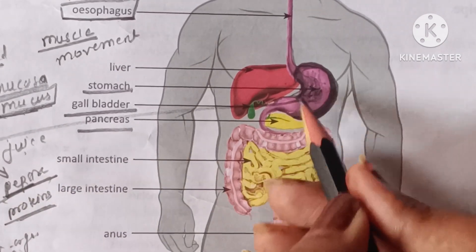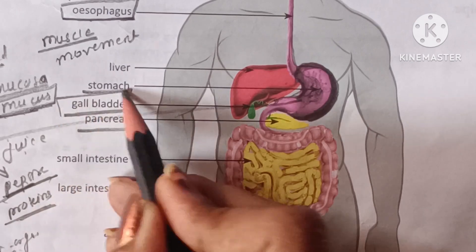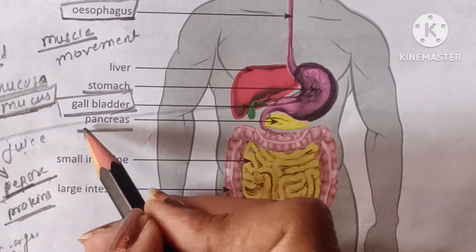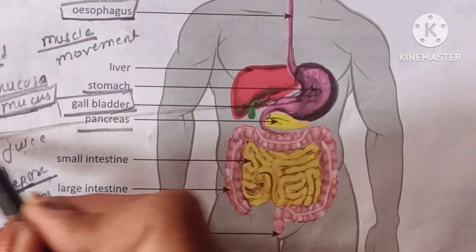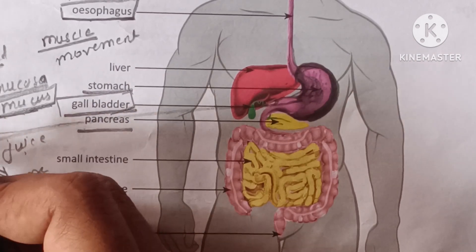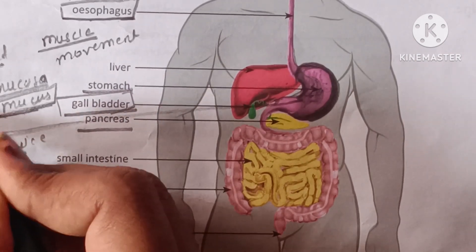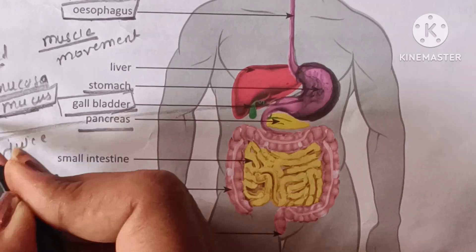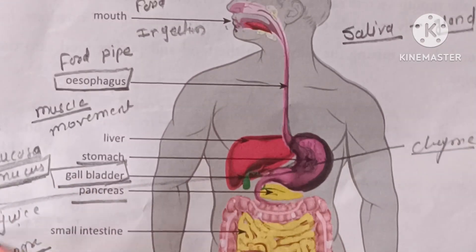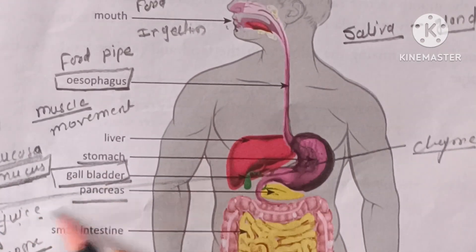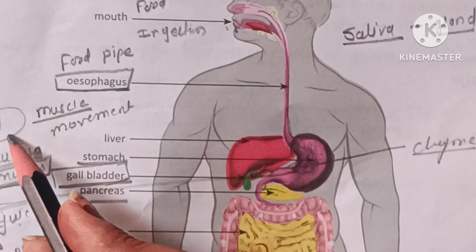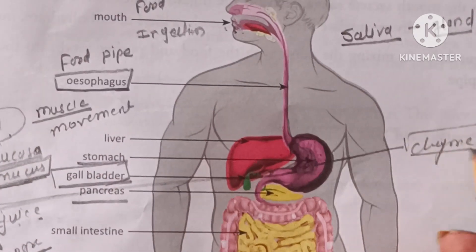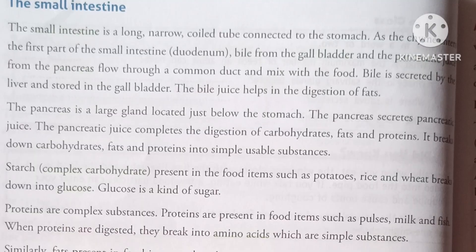From the gallbladder, gastric juice is secreted, and from the pancreas, pancreatic juice is secreted. With the help of this gastric juice and the churning of food in the stomach, that process is called chyming.